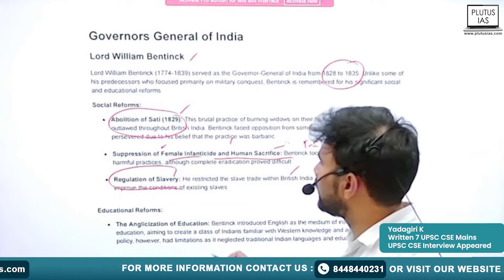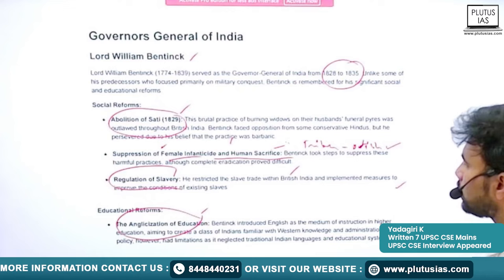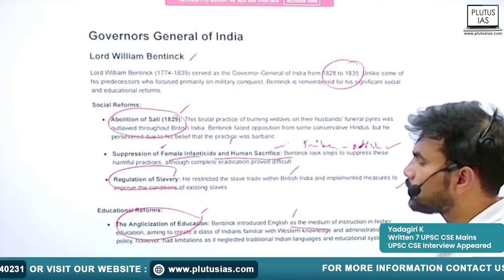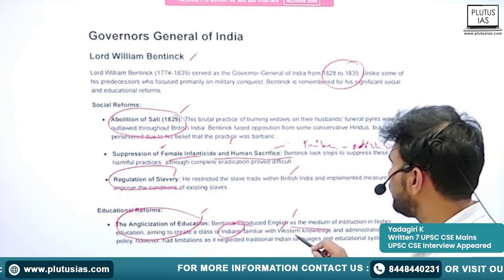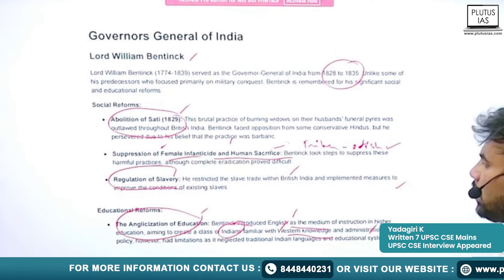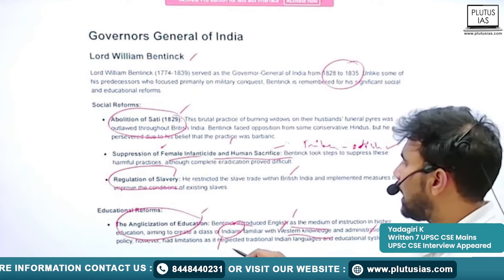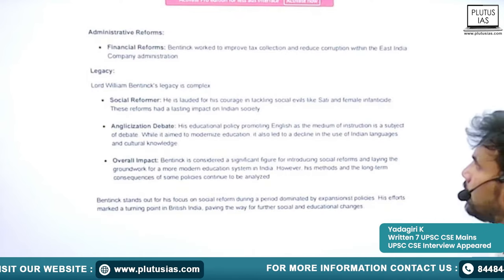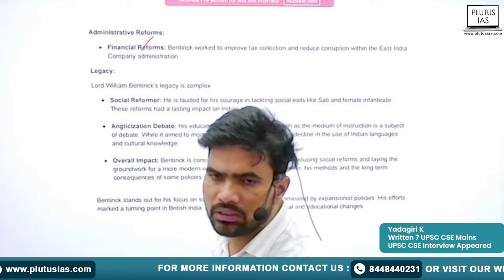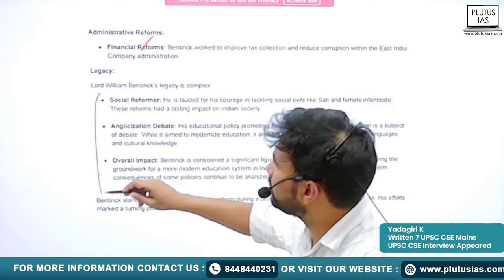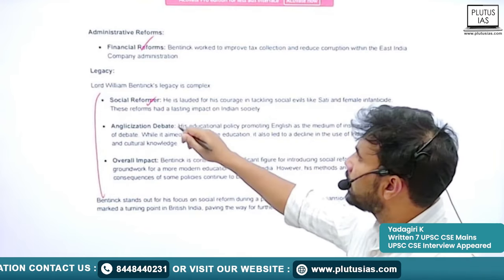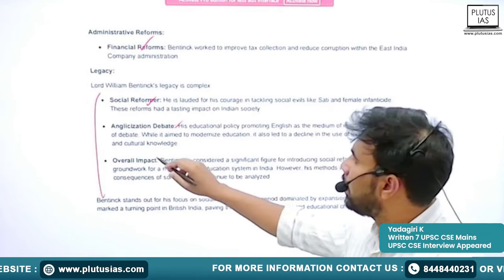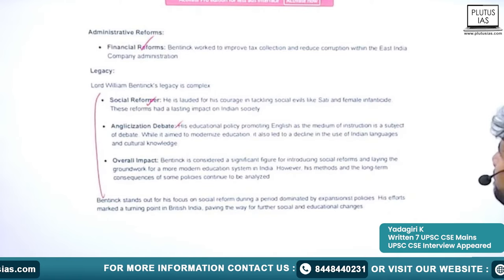Lord William Bentinck introduced educational reforms — he tried to anglicize education in India by introducing English as the medium of instruction in higher education. He wanted to create a class of Indians familiar with Western knowledge and administration. However, this policy had limitations as it neglected traditional Indian languages and educational systems. He also contributed somewhat to financial reforms. His legacy is that he is known as a social reformer in India who promoted English education, sometimes at the expense of Indian education.